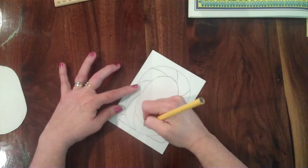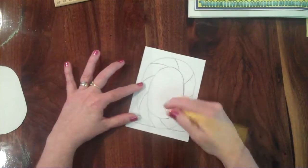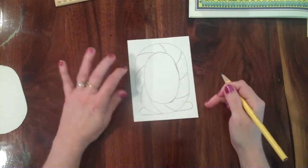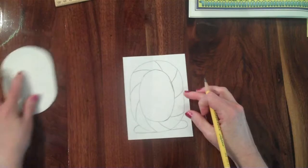All right, if you wanted to get really technical with it, you can erase that line and make a line here so it looks like that's actually curved the whole way around, but I'm not going to worry about that for time's sake right now.